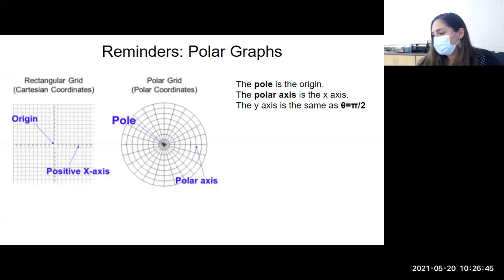So these are some important vocabulary terms that I want to make sure you know, especially when you're taking your formative. The positive x-axis is known as the polar axis. We measure our angles starting from there. If you're looking at the unit circle, you start at zero and then go counterclockwise for positive angles. So the positive x-axis is also known as the polar axis.